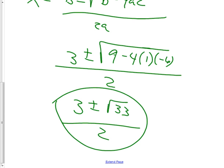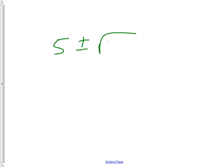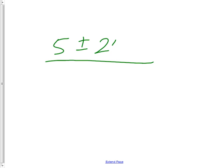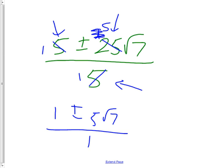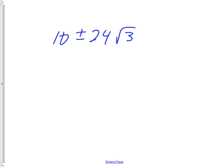Sometimes the quadratic formula result can be reduced. For example, if you had 1 plus or minus 5 root 7 all over 5, you could reduce. Here's a practice: simplify 10 plus or minus 24 root 3 all over 12. Figure out what goes into all three numbers - in this case it's 2 - so you get 5 plus or minus 12 root 3 all over 6.